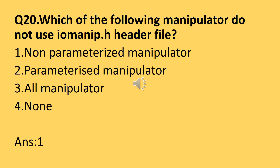Question number twenty: which of the following manipulators do not use the iomanip.h header file? The answer is non-parameterized manipulators. Manipulators are used in C++ to format program output. There are two types: parameterized and non-parameterized. Non-parameterized manipulators do not accept parameters — endl, hex, and oct are examples — and their declarations are not in iomanip.h. Parameterized manipulators like setw, setprecision, and setbase do require iomanip.h. So if you use non-parameterized manipulators, you don't need to include iomanip.h.